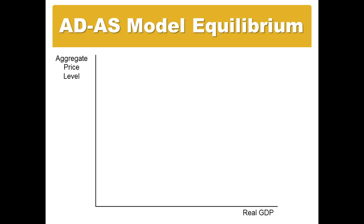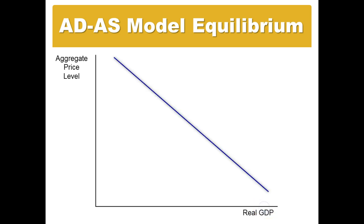The first thing we want to do is look at the model. The model is the aggregate demand and aggregate supply model, and we draw it as a regular graph. On the vertical axis, we have the aggregate price level — this is sort of the CPI, the measure of the change in prices in the economy, whether there is inflation or deflation. Along the horizontal axis is a measure of real GDP, or what we call output. The aggregate demand curve is downward sloping, and it basically measures the overall demand in the economy for goods given a certain price level.